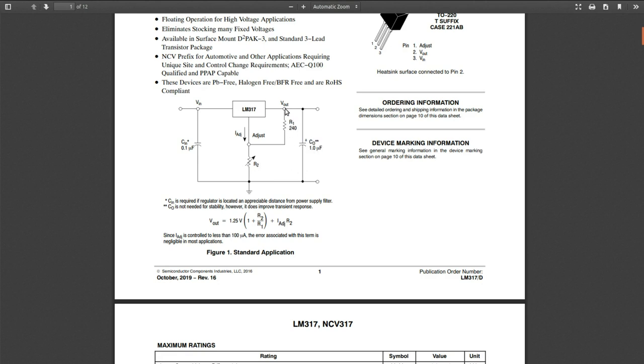This one's got a fixed resistance between there and then a trimmer or variable resistance to ground to basically create that voltage divider. There is the math if you want to figure it out without doing it experimentally.